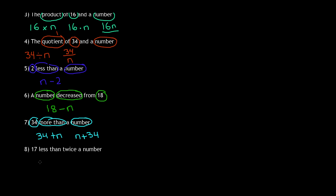The last one is the challenge question: 17 less than twice a number. This time we're doing two operations — subtraction and multiplication. Twice a number means we're multiplying a number by two. So we have twice a number, and then 17 less than that. Key terms: 17, less than, twice, and a number. We are subtracting 17 from twice a number. Twice a number is written as 2n. So 17 less than twice a number is written as 2n minus 17.